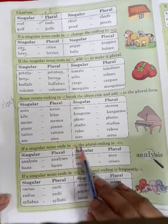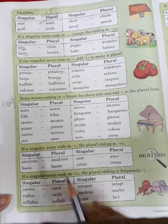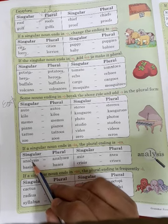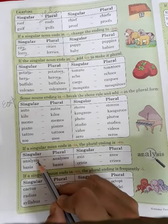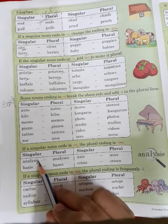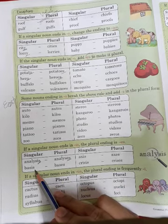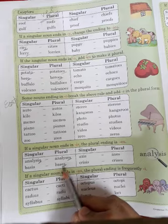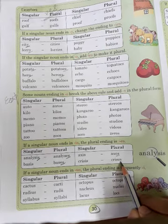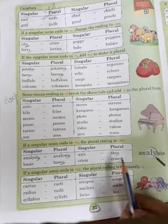Next rule: if a singular noun ends in -is, the plural ending is -es. For example, 'analysis' ends in -is, so when converted to plural, -is changes to -es, giving 'analyses'. Basis → bases, axis → axes, crisis → crises. The -is ending gets changed to -es.